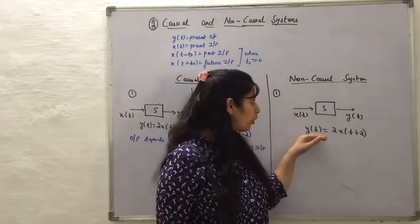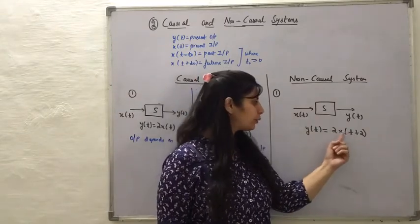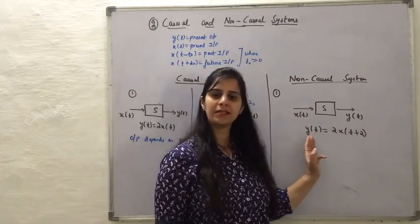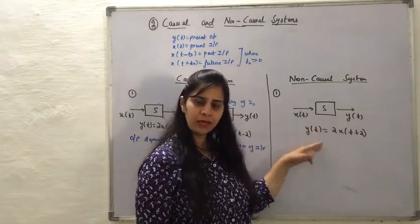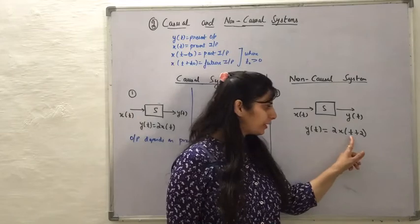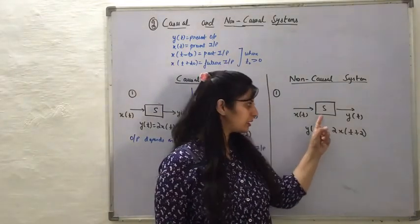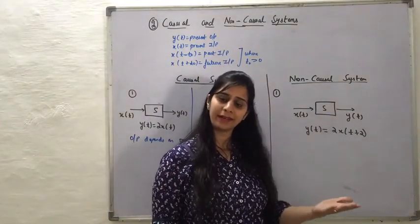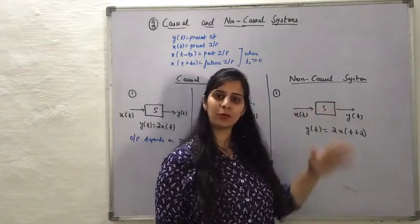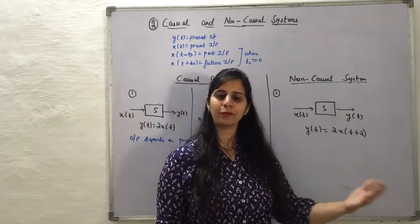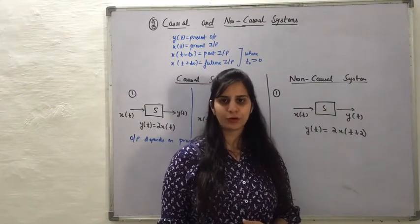For the non-causal system, I have given an equation that relates the input to the output. What we can see in this equation is that the present value of the output depends upon a value of the input that will be occurring in the future. So this is a system that has to predict future input values, and these systems in which the output depends upon future values of the input are called non-causal systems.